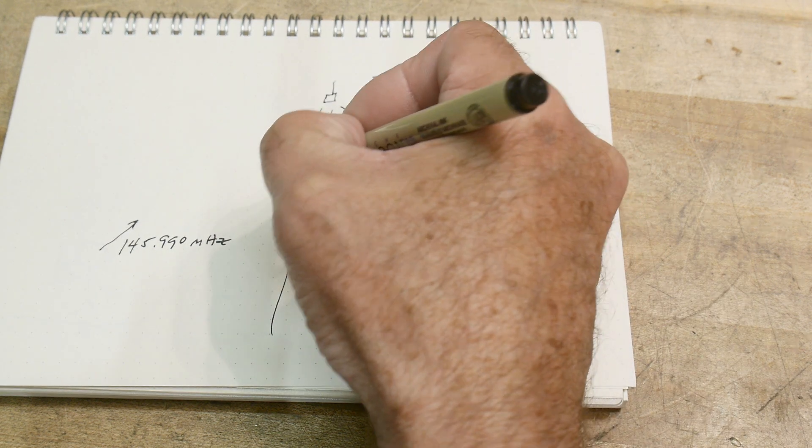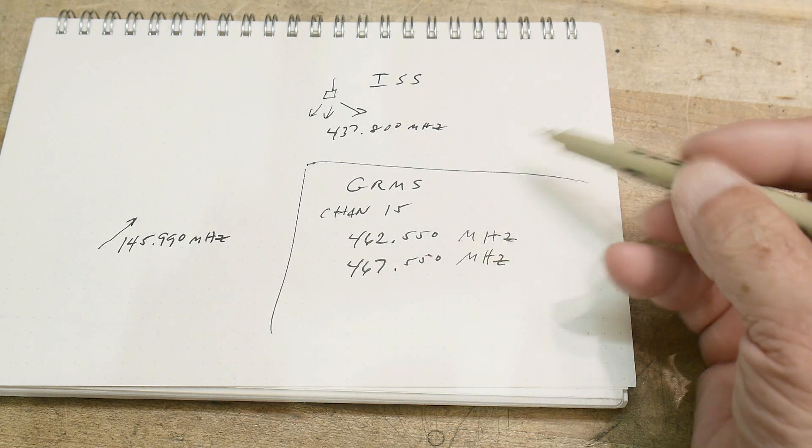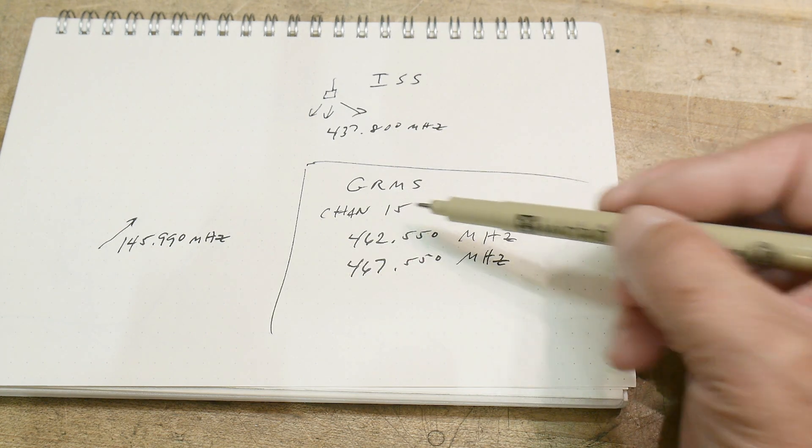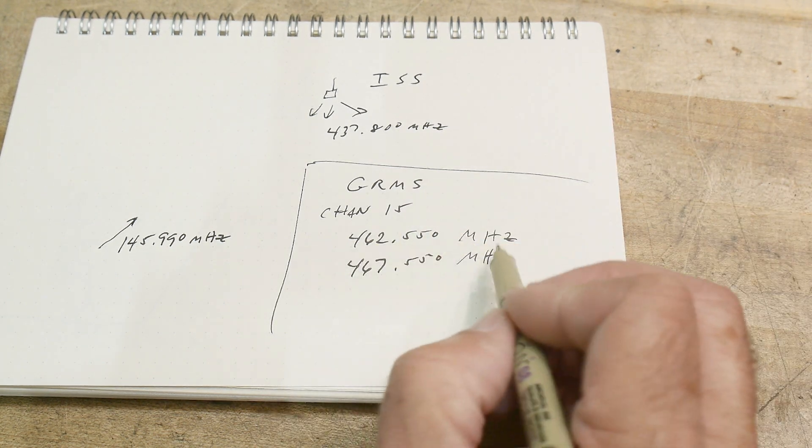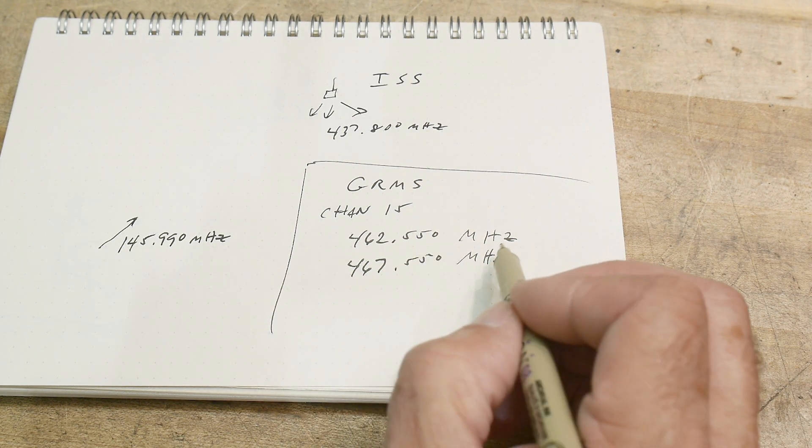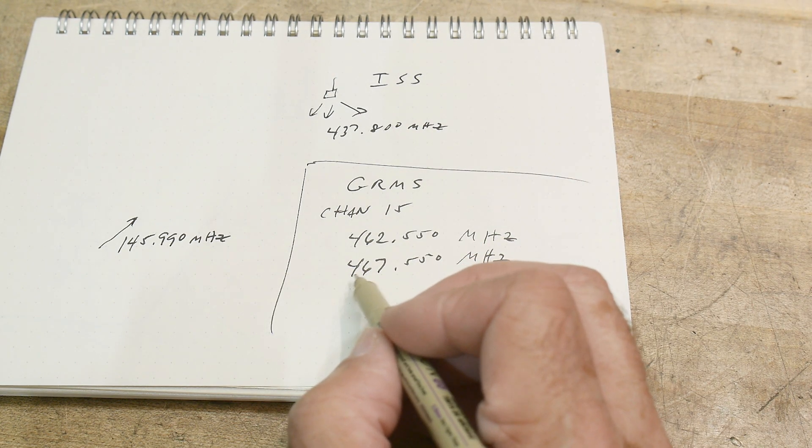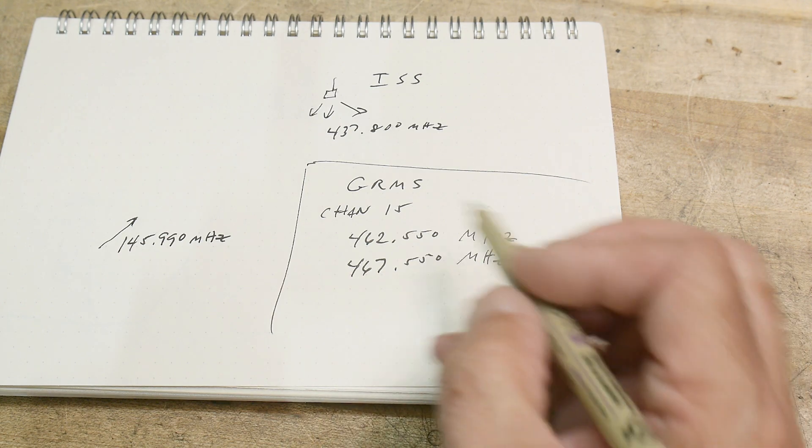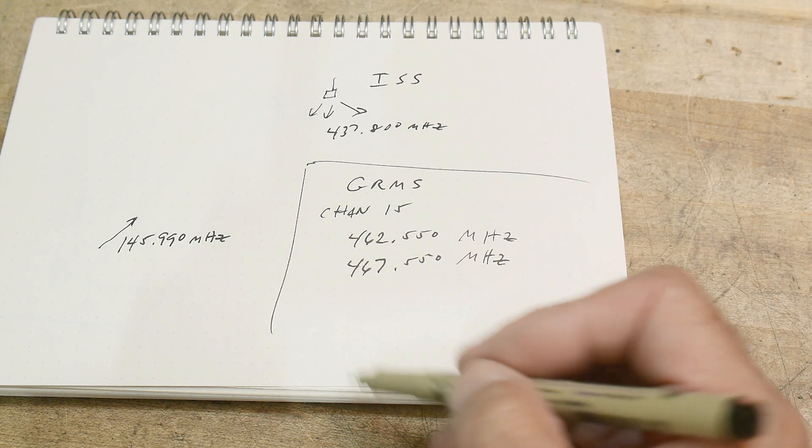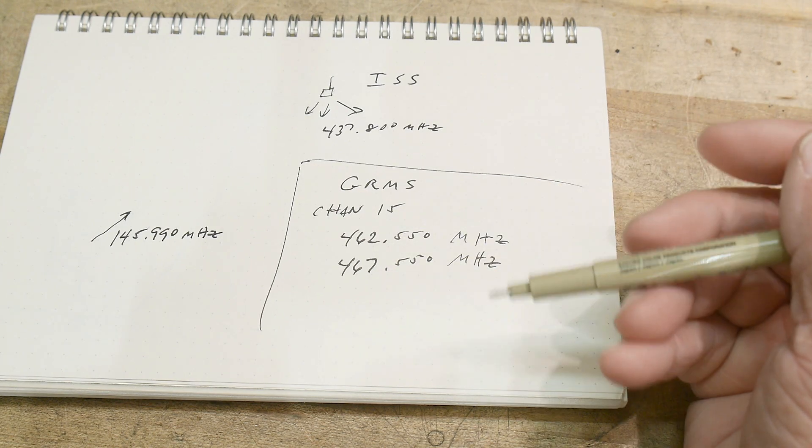All right, in GMRS there are channels 15 through 22 that are repeater channels and you can look them up online. Here's an example, this is channel 15. We're going to be transmitting up on 462.550 megahertz and then the repeater will retransmit that signal at 467.550. So there's a 5 megahertz difference between the frequencies. So all of the channels 15 through 22 they all have different frequencies but they're always 5 megahertz apart. That's called the offset, there's a 5 megahertz offset.